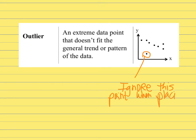So we would just ignore this when we get ready to draw our line. Ignore this point when placing your line in the scatter plot. You wouldn't necessarily have to count this one to be equal points on both sides because it doesn't really follow the pattern.